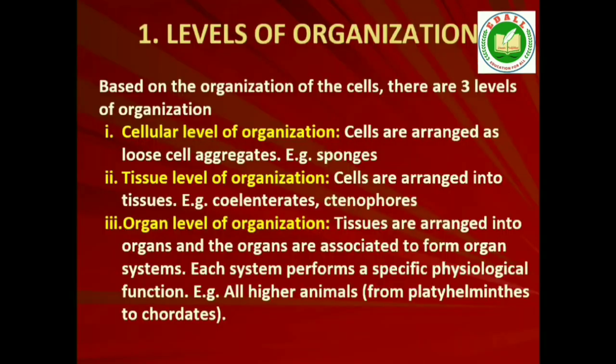1. Levels of Organization: Though all members of Animalia are multicellular, all of them do not exhibit the same pattern of organization of cells. For example, in sponges, the cells are arranged as loose cell aggregates, i.e., they exhibit cellular level of organization. Some division of labor occurs among the cells.